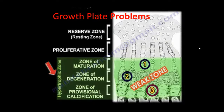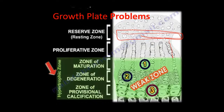The growth plates have several layers. The reserve zone, which is the resting zone. Then the proliferative zone — the cells are like columns on top of each other. Then the zone of hypertrophy, which has three sub-zones: the zone of maturation, where cells mature; the zone of degeneration, where they degenerate; and the zone of provisional calcification, where after the cells mature, degenerate, and die, the tissue becomes calcified. That creates a lot of confusion because of the sub-zones.